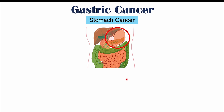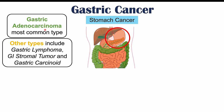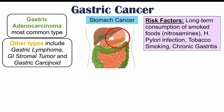Stomach cancer is a cancer of the stomach. There are multiple types of stomach cancer. The most common type is gastric adenocarcinoma, and some other types include gastric lymphoma, gastrointestinal stromal tumor, and gastric carcinoid cancer. There are multiple risk factors for getting stomach cancer, and each risk factor is more associated with a particular type. We're not going to talk about those details in this lesson — please check out my overview of stomach cancer for more information.